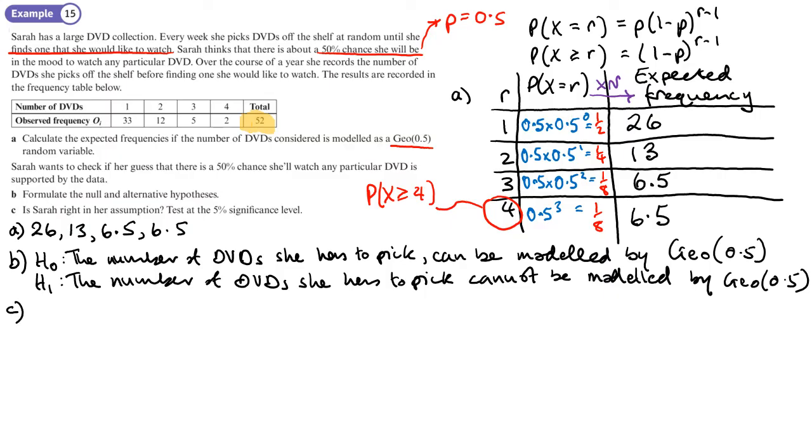That's part B. Is Sarah right in her assumption? Check at the 5% significance level. So we're going to work out chi squared, which is going to be the sum of our observed squared over the expected minus N.